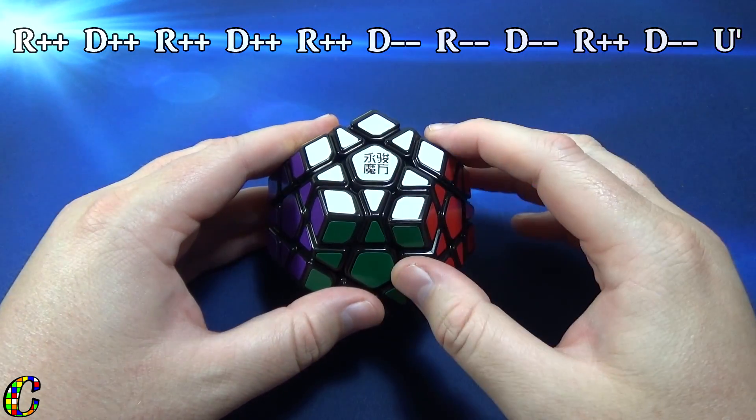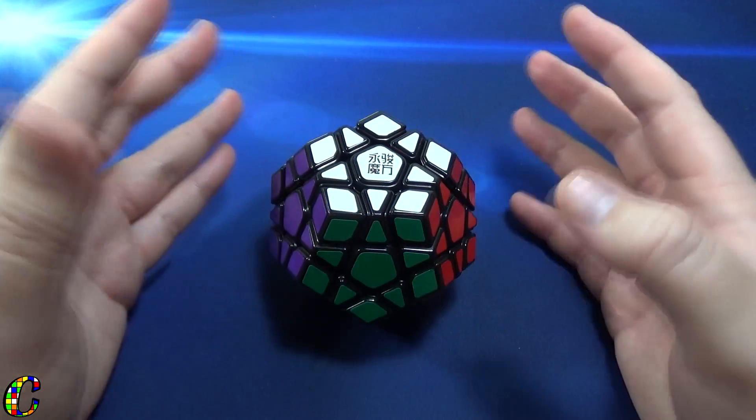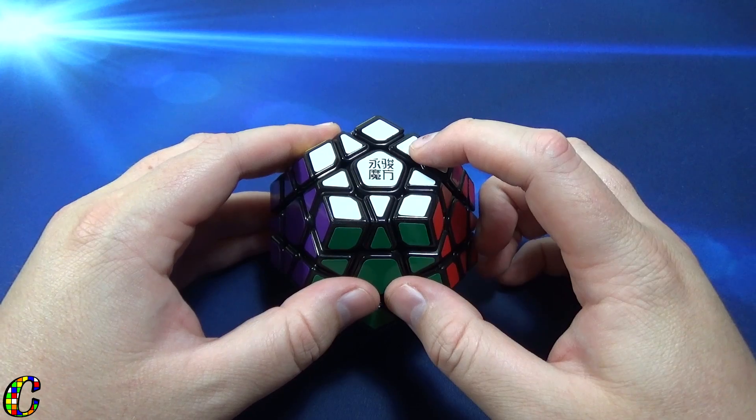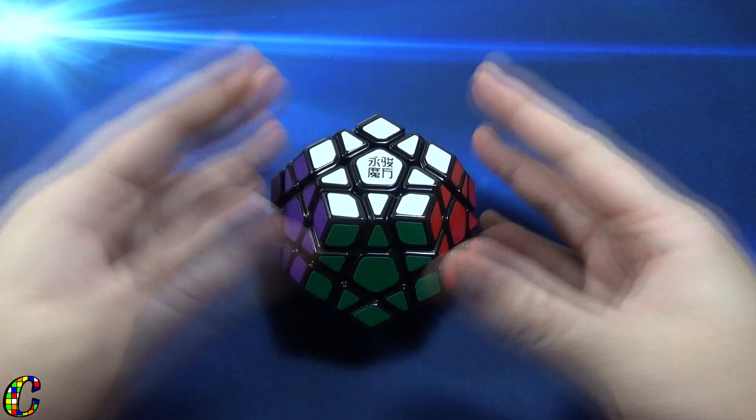So just using those three basic moves along with their inverses, you can get a really scrambled megaminx. And that's how you'll do it if you ever scramble at a competition or just at home if you're practicing.